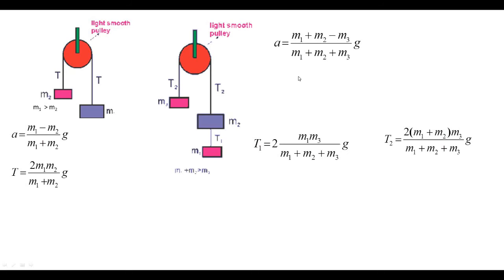We now verify how the three-block results reduce to the two-block results under special cases. Note that the mass labeling differs between the two diagrams — m2 and m3 here versus m1 and m2 there — so substitutions must be made carefully and correspondingly to verify the expressions become equal.